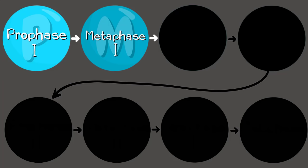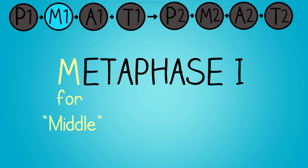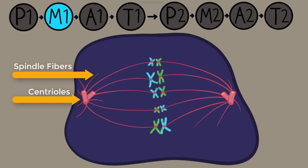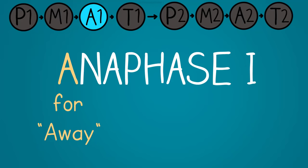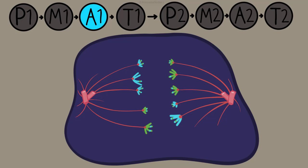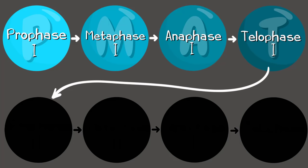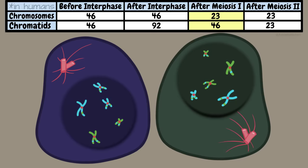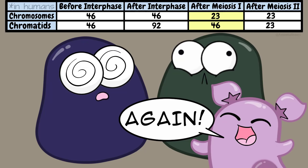Now we move into metaphase 1. Think of M as standing for middle — the chromosomes are now in the middle of the cell, but in pairs rather than a single file line. During anaphase 1 — think A for away — the chromosomes are pulled away by the spindle fibers. Then telophase 1 produces two newly formed nuclei, making it obvious that meiosis 1 ends with two new cells. Cytokinesis follows to split the cytoplasm.